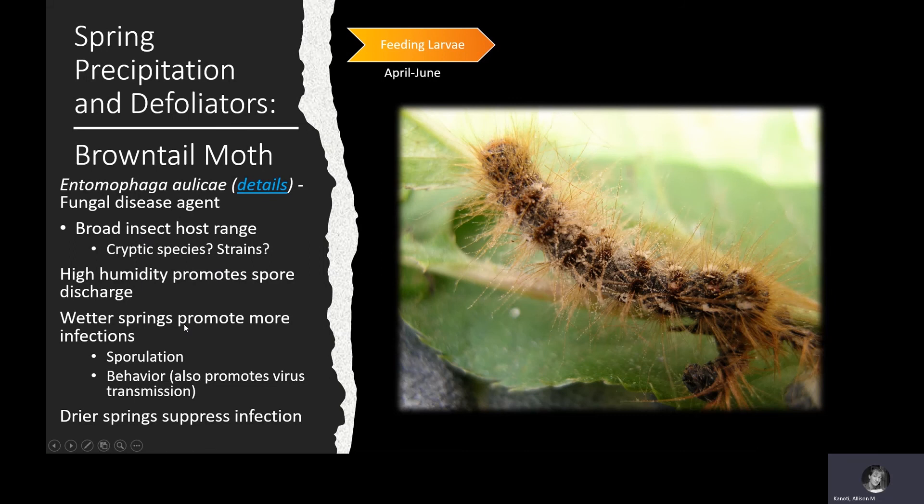It is a fungus, and as you might expect, high humidity promotes spore discharge and activity of the fungus — in wetter weather you get more infections. Those infections are promoted both by the activity of the fungus and the behavior of the caterpillars. The caterpillars tend to huddle together during wetter periods, and that promotes disease transmission of both that fungal disease and also a viral disease. Conversely, drier springs suppress infection. These disease agents can play a big role in the population dynamics of this insect.